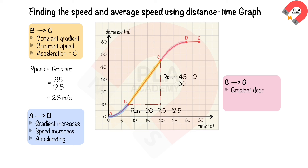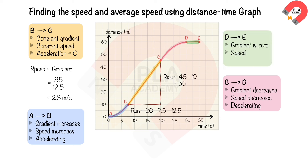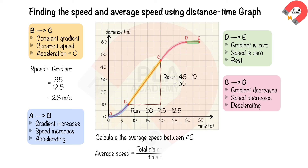Between C and D, the gradient is decreasing, so speed is decreasing and the object is decelerating. Between D and E, the gradient is zero, so speed is zero and the object is at rest. The average speed between A and E is found by total distance / total time. Total distance = 60 m, total time = 35 s. Therefore, average speed = 60 / 35 = 1.71 m/s.